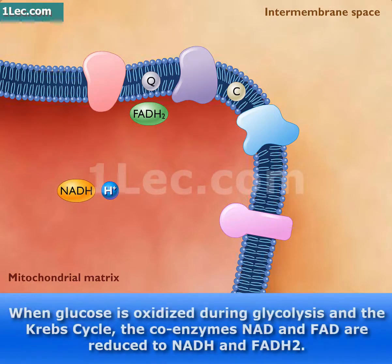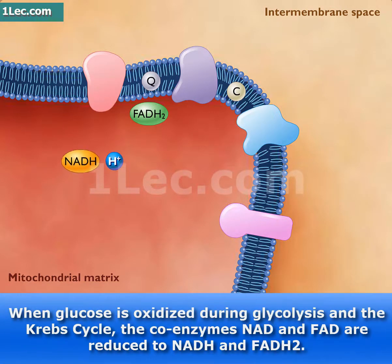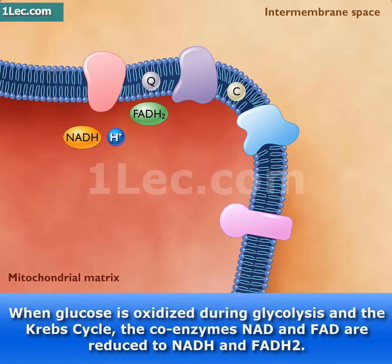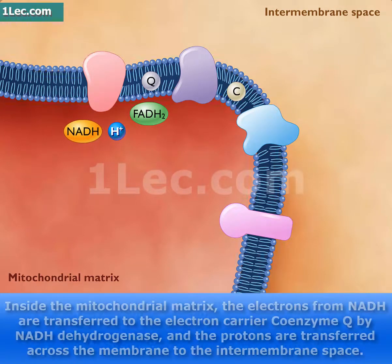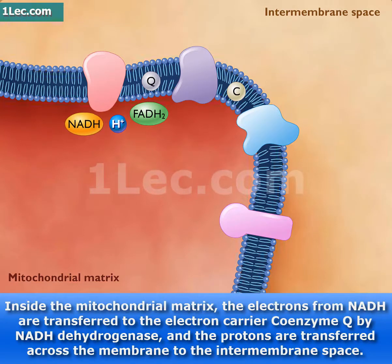When glucose is oxidized during glycolysis and the Krebs cycle, the coenzymes NAD and FAD are reduced to NADH and FADH2, which accumulate inside the mitochondrial matrix.